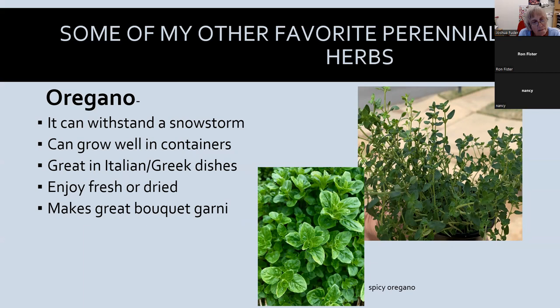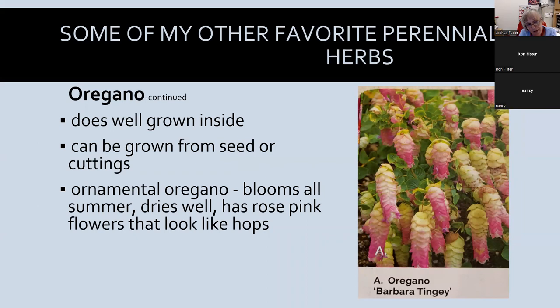If you haven't tried the Hot and Spicy oregano, try it — it's really good in salsa and adds pizzazz to tomato sauce, and it makes a great bouquet garni. Oregano makes a great substitute for basil too. There's even an ornamental oregano called Barbara Tingi. I divided one hanging basket in spring and now have two. It blooms all summer and dries well. The flowers start lime green then turn into a beautiful rose color — it looks like hops. A very interesting one to put in your flower pots.